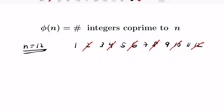We can also get rid of the multiples of 3 that we haven't seen yet, which is 3 and 9. All these other numbers have no common factors with 12 except for 1. So phi of 12 is the count of remaining numbers, which is explicitly 4.